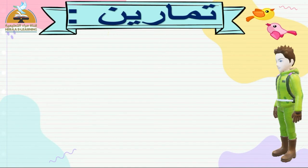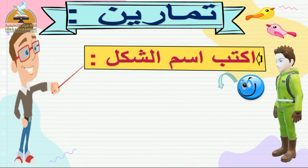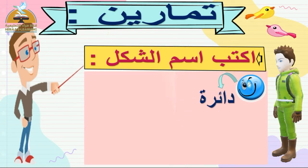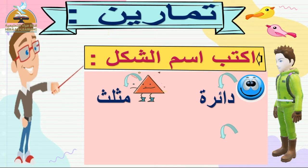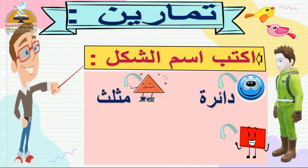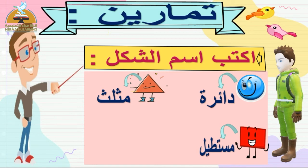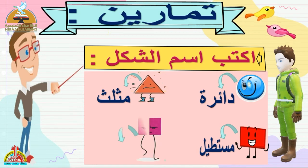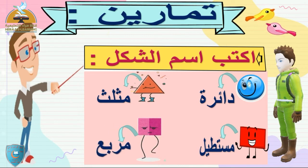يلا نشوف التمارين على الدرس: بيقول لي اكتب اسم الشكل. جايبلي أشكال من الأشكال ثنائية الأبعاد وعايزني أكتب أسمائها. اسم الشكل الأول: دائرة - دال ألف بهمزة على نبرة راء تاء مربوطة. الشكل التالي: مثلث - ميم ثاء لام ثاء. الشكل اللي بعده: مستطيل - لازم تستهجى واحدة واحدة: ميم سين تاء طاء مد بالياء ولام. آخر شكل: المربع - ميم راء باء عين.